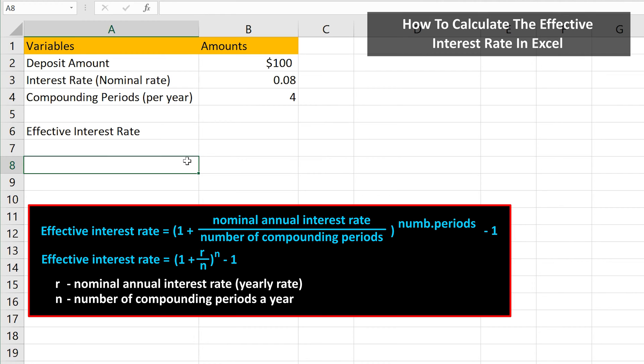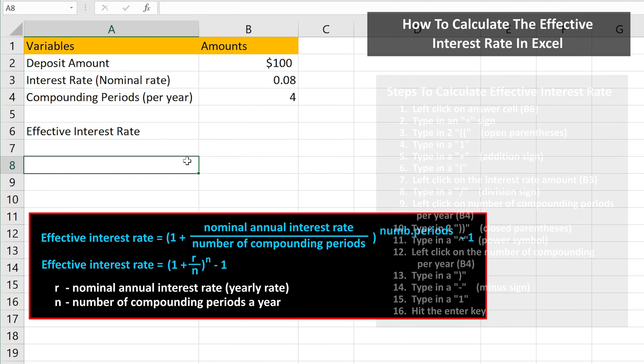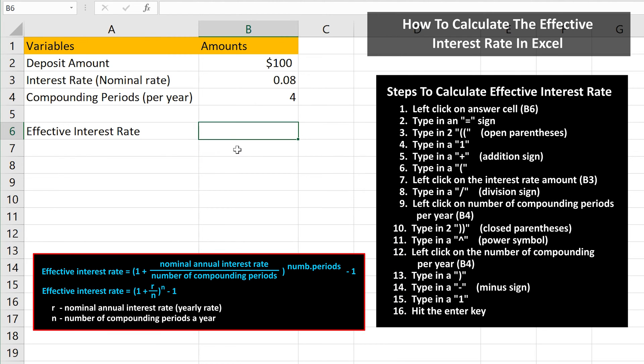The stated or nominal rate is 8%, but the effective rate will actually be higher than 8%. We're going to calculate the effective rate and put the answer in cell B6. So I left-click on cell B6.